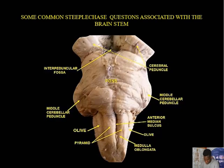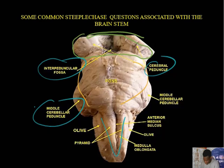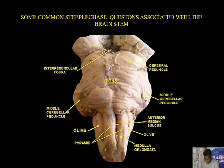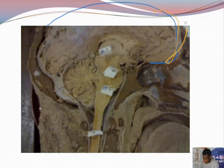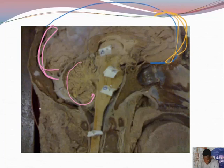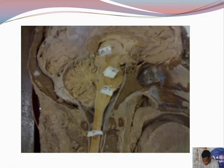Here is a better picture of the brainstem. The midbrain is not defined here but it is somewhere up here; this is a very large pons, and this is the medulla. A number of structures have been labeled and these are structures that can be pinned in your steeplechase. Despite the many structures, it's also important to note the different parts of the brainstem — a question may simply ask you to identify each part.